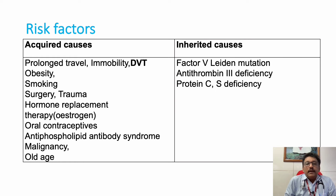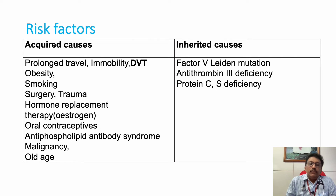Inherited causes include Factor V Leiden mutation, antithrombin 3 deficiency, protein C deficiency, and protein S deficiency. These are called inherited thrombophilic conditions.